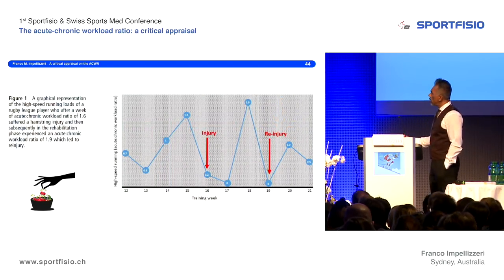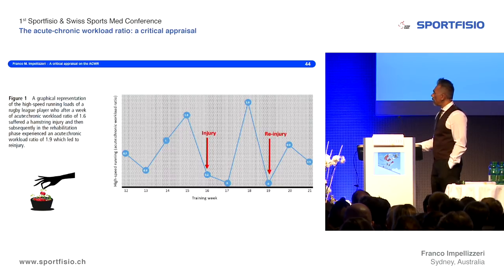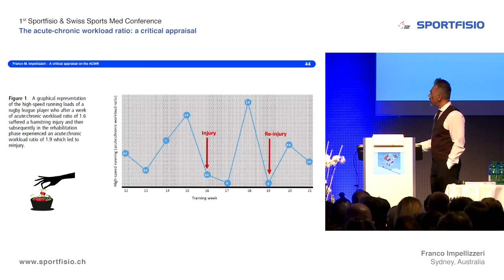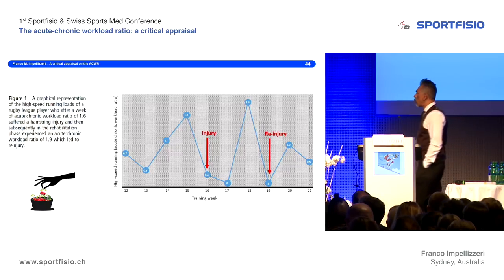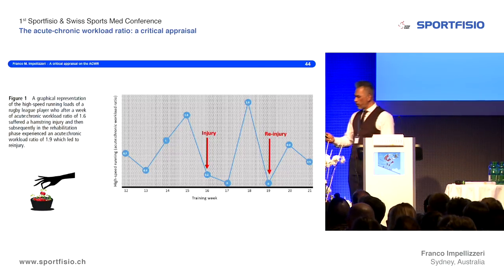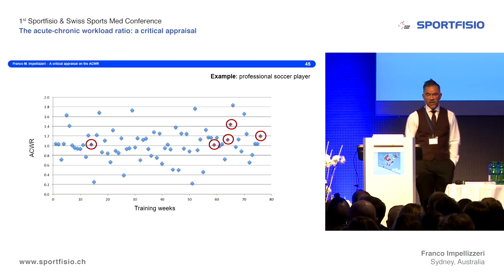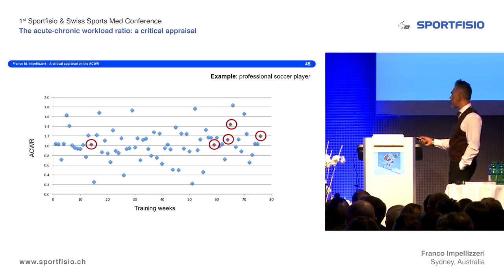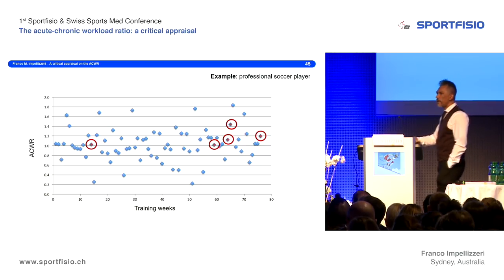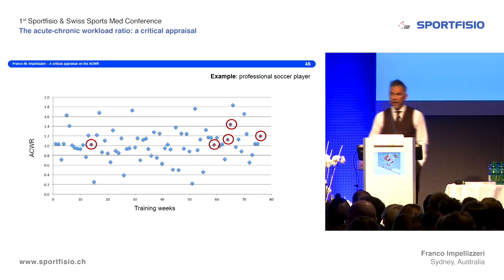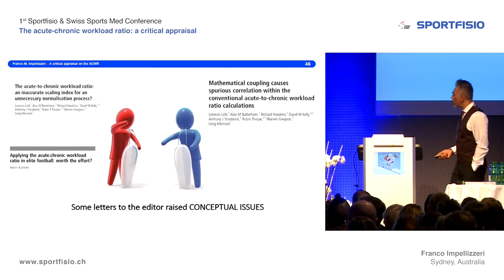In the same paper, an example was shown of a high acute-chronic ratio followed immediately by injury — a selected, cherry-picked example. I can show you a counter-example from one of the papers published by that research group, where if you look at the graph you see nothing similar. Presenting example after example doesn't help much — it's a form of confirmation bias.